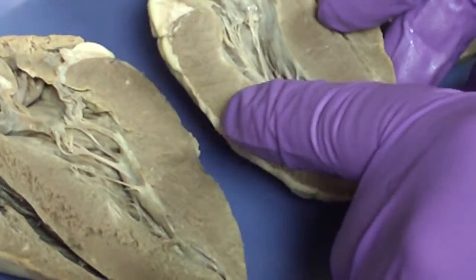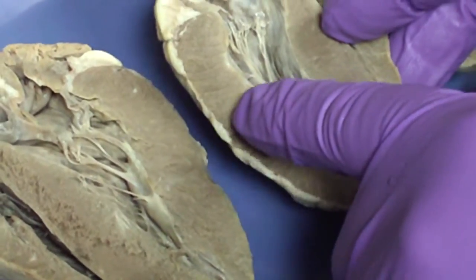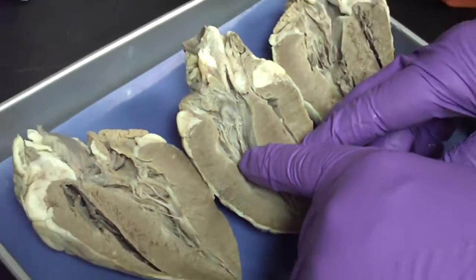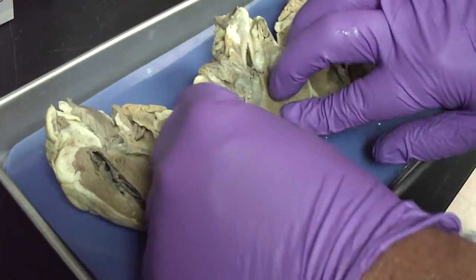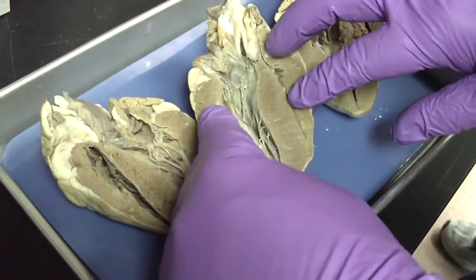Epicardium on the outside. Myocardium is the big brown thickness, the muscle layer. And then the kind of filmy looking, shiny stuff on the inside wall, that's the endocardium.